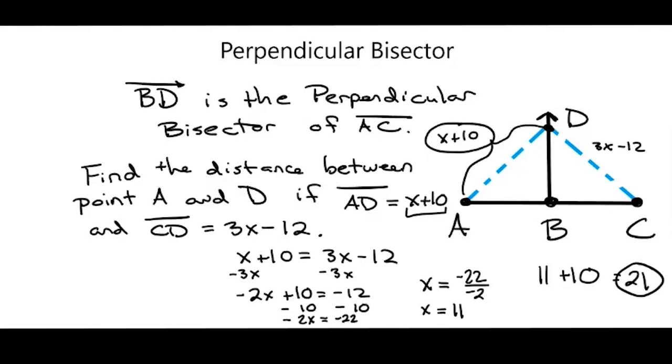So the distance from A to D is 21. And that's how you use perpendicular bisectors to find the distance between points.